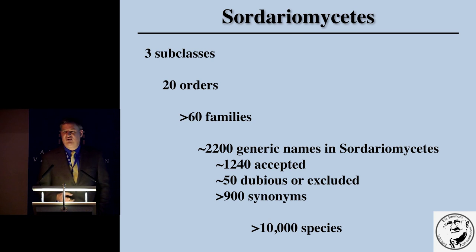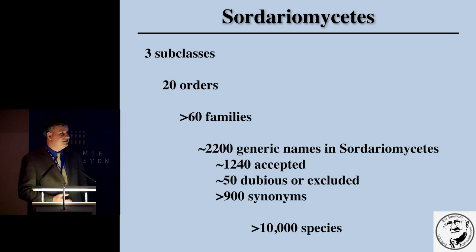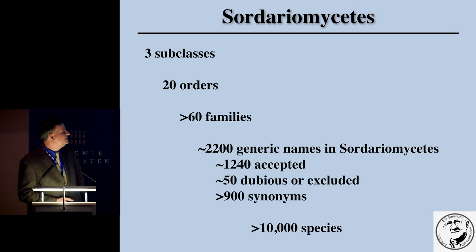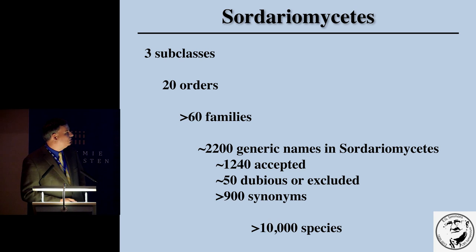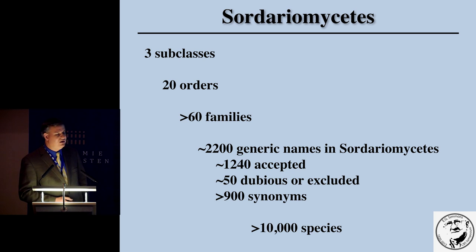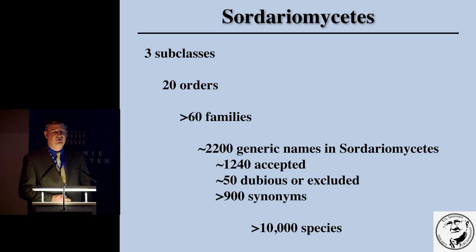The Sordariomycetes presently contains three subclasses, 20 orders, and more than 60 families. Somewhere around 2,200 generic names occur throughout the class. According to some of the registries, around 1,200 are accepted, 40 are excluded, and 50 are dubious. There are more than 900 synonyms so far. It is quite a large group in that there are over 10,000 species throughout this class.